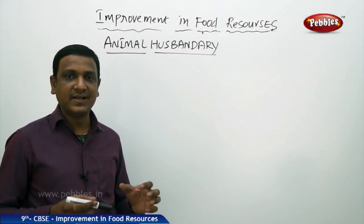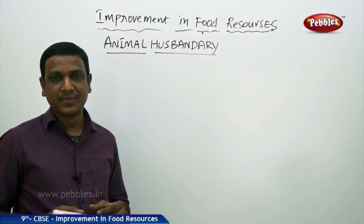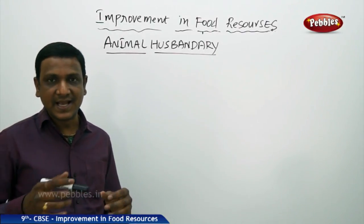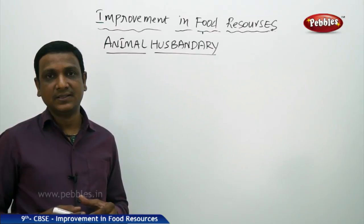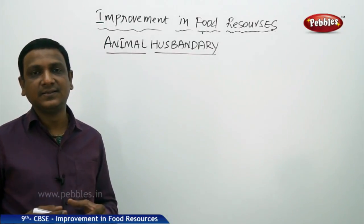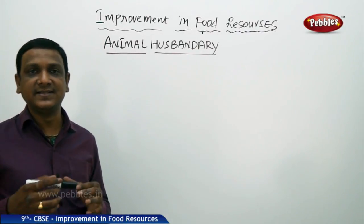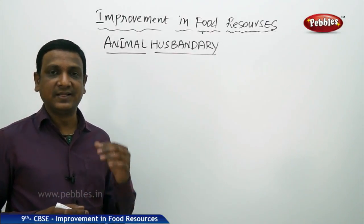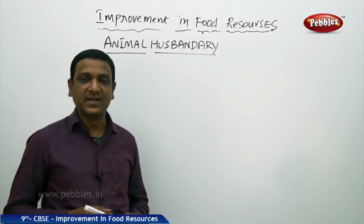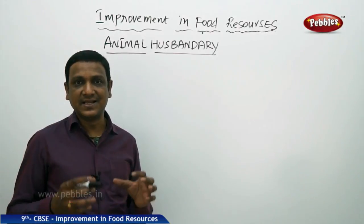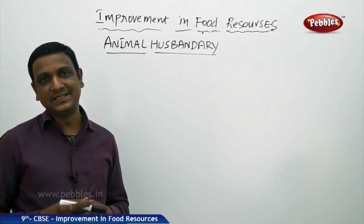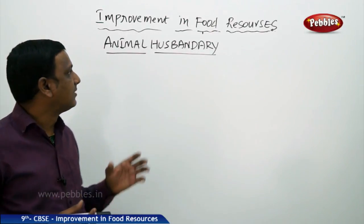Animal husbandry covers everything related to animals — feeding, breeding, and taking care of diseases. The animals are bred to give good varieties of young ones, produce good amounts of milk, and be protected from diseases. It includes care of various animals like cattle farming, poultry, fish culture, prawn culture, and beekeeping.